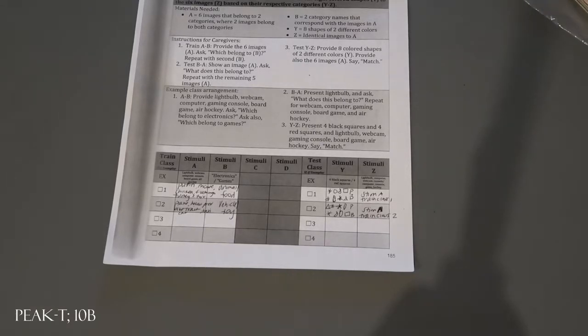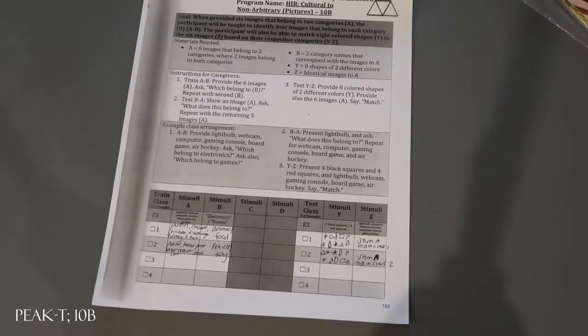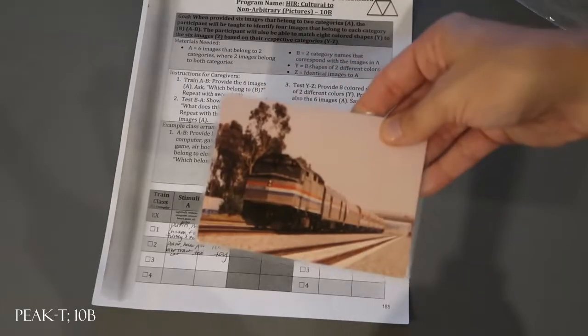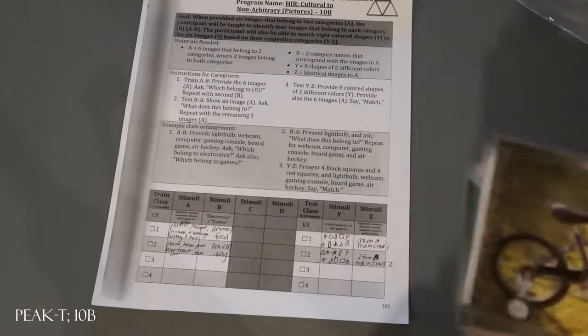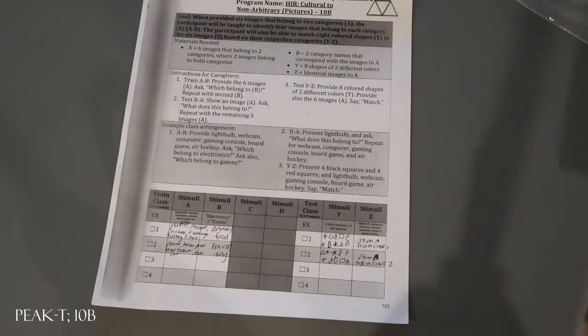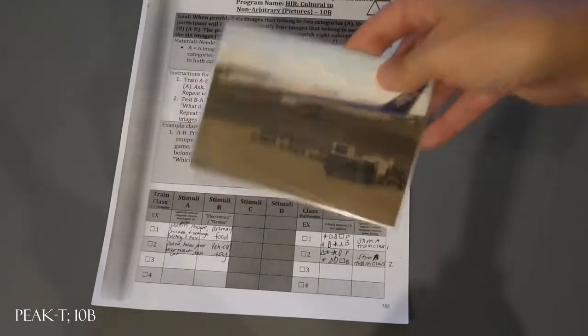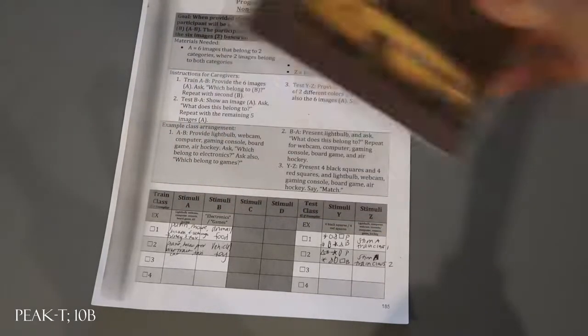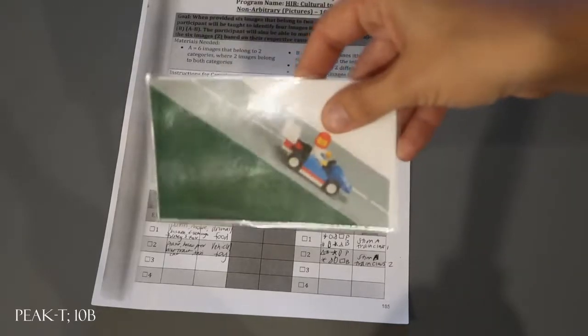Also test block two is going to be B to A where you're going to go through these images and ask, what does this belong to, for each of the six images. Going through all six images, again that is one trial.